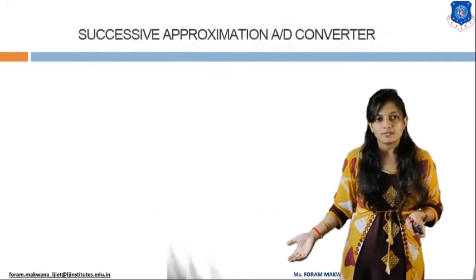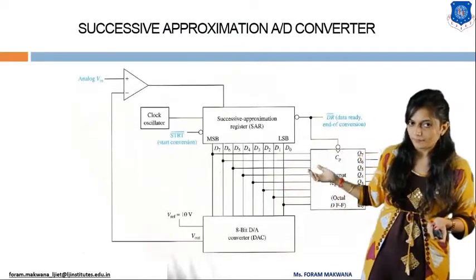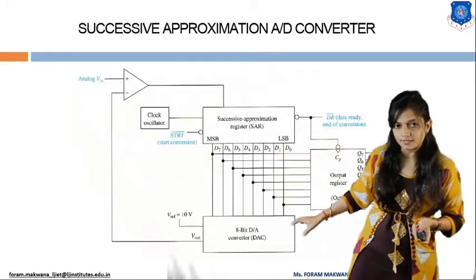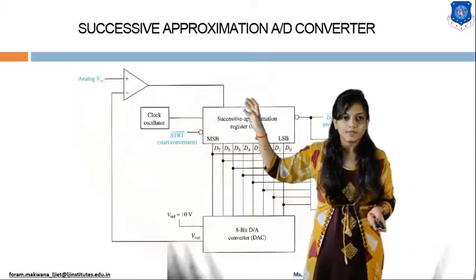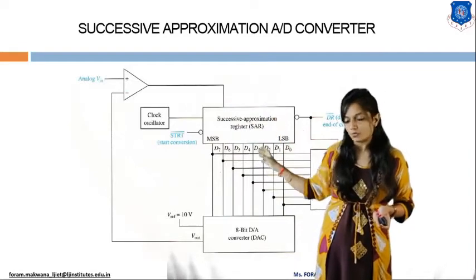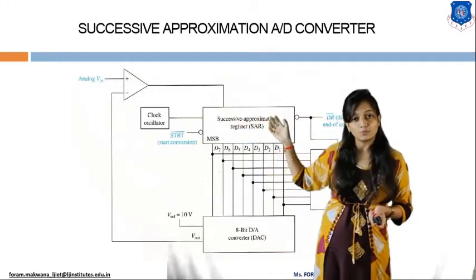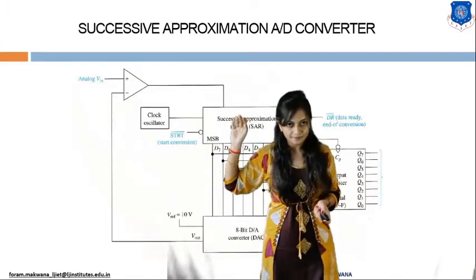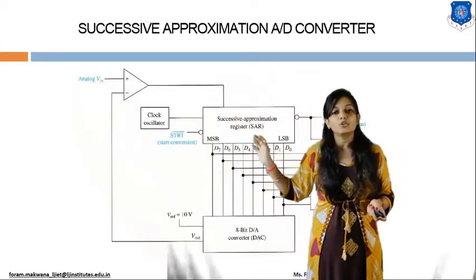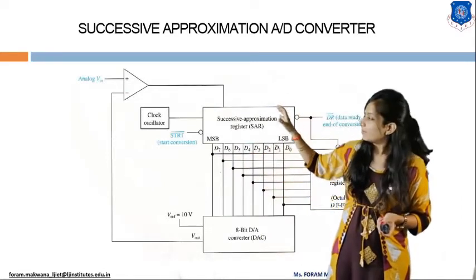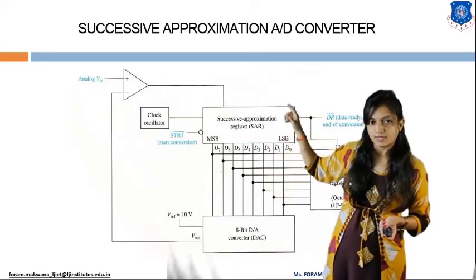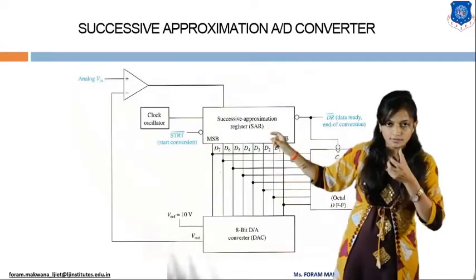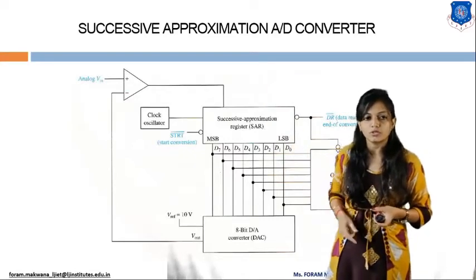The circuit diagram of this successive approximation converter includes elements like the SAR and an 8-bit DAC. We compare the analog output of the 8-bit DAC with the reference analog signal. To start conversion, we trigger the SAR with a clock pulse and send a start conversion pulse.